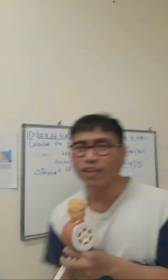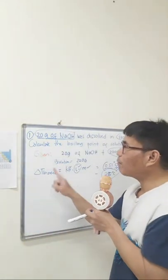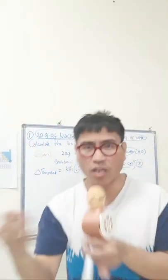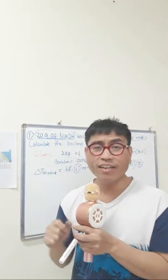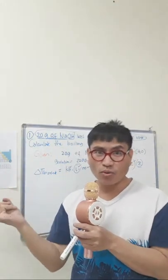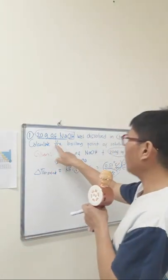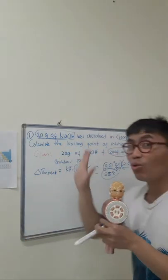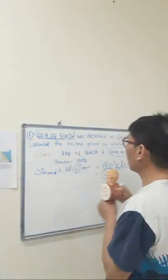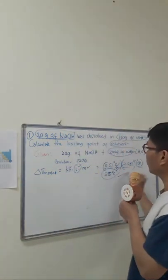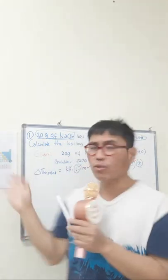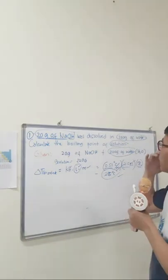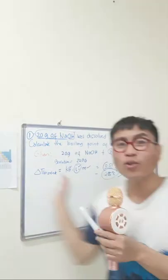This 2.55 degrees Celsius is your boiling point elevation of the solute — meaning sodium hydroxide, not the water, not the solution. But take note: the question asks to calculate the boiling point of the solution, not the solute. So you still have to complete the solution — this 2.55 is not the final answer. This is the tricky part because most students stop here, and unfortunately that wrong answer is also included among the answer choices.